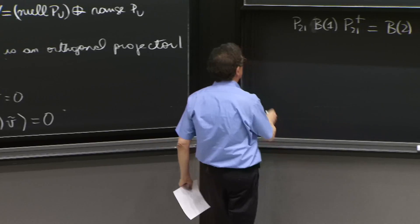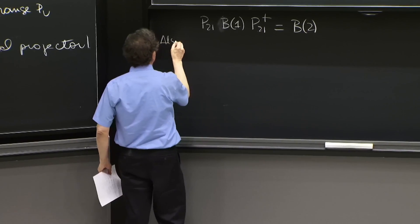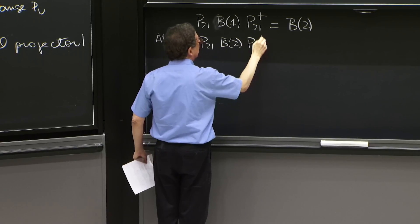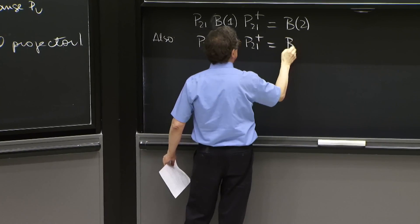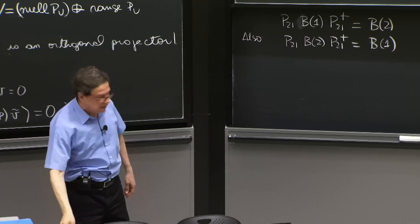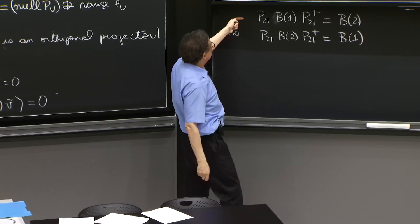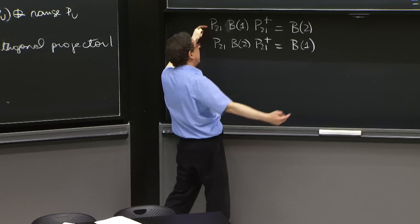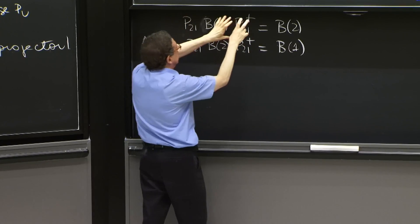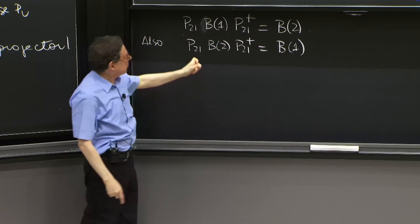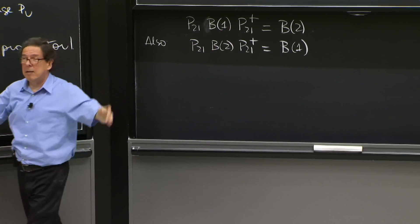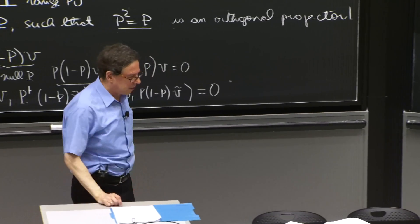Similarly, you could do this also. Would not be a surprise to you that P21 B2 P21 dagger is equal to B1. And you don't have to do the same argument again. You could multiply this equation by P21 from the left and P21 dagger from the right. These things become 1 and 1, and the operators remain on the other side and gives you this. So this second equation comes directly from the first.